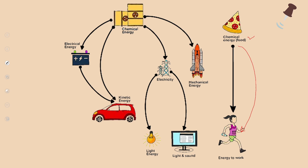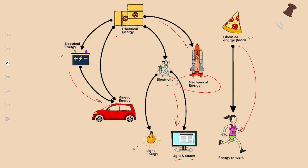In this way, chemical energy has transformed into electrical energy, which is then converted into the kinetic energy utilized by vehicles. Further, we have chemical energy converted into electricity, which is also converted in light bulbs into heat energy. This electricity is also converted into light and sound energy. And similarly, chemical energy is also converted into mechanical energy.